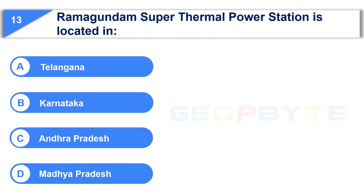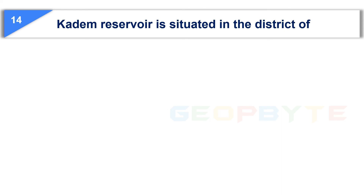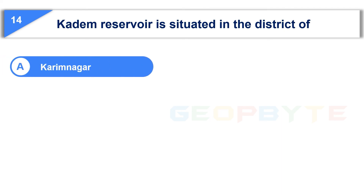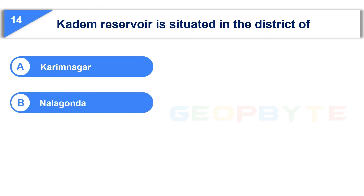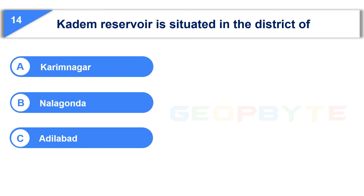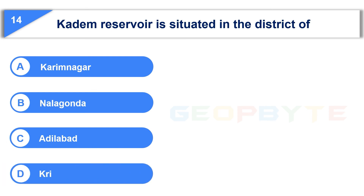Your time is up and the correct answer is Option A: Telangana. The 14th question is: Kadham reservoir is situated in the district of — Option A: Karimnagar, Option B: Nalgonda, Option C: Adilabad, Option D: Krishna. Your time starts now.